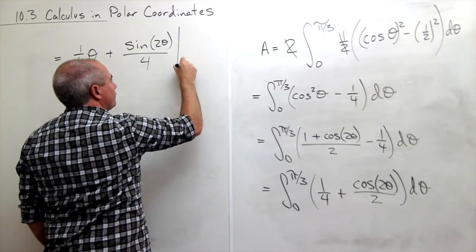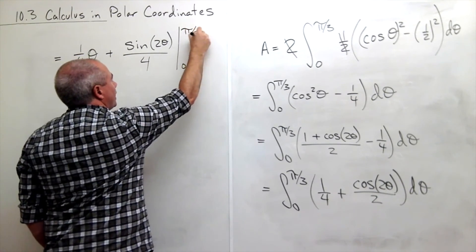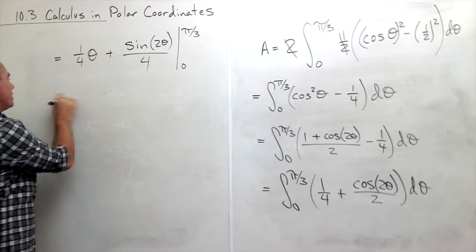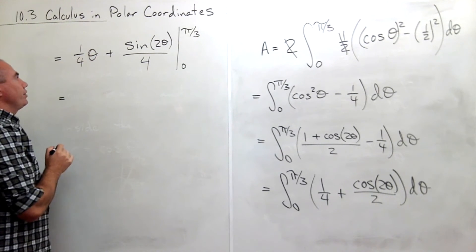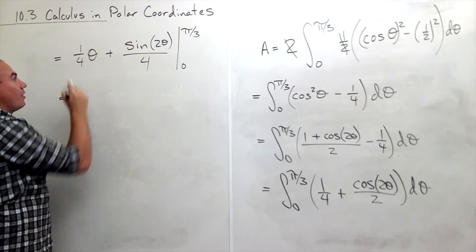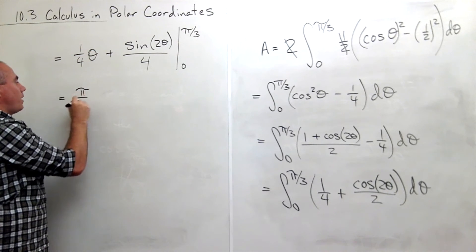all of that evaluated from 0 to pi over 3. So let's start out by plugging in pi over 3. If I plug in pi over 3 for theta, I get pi over 12. So pi over 12.